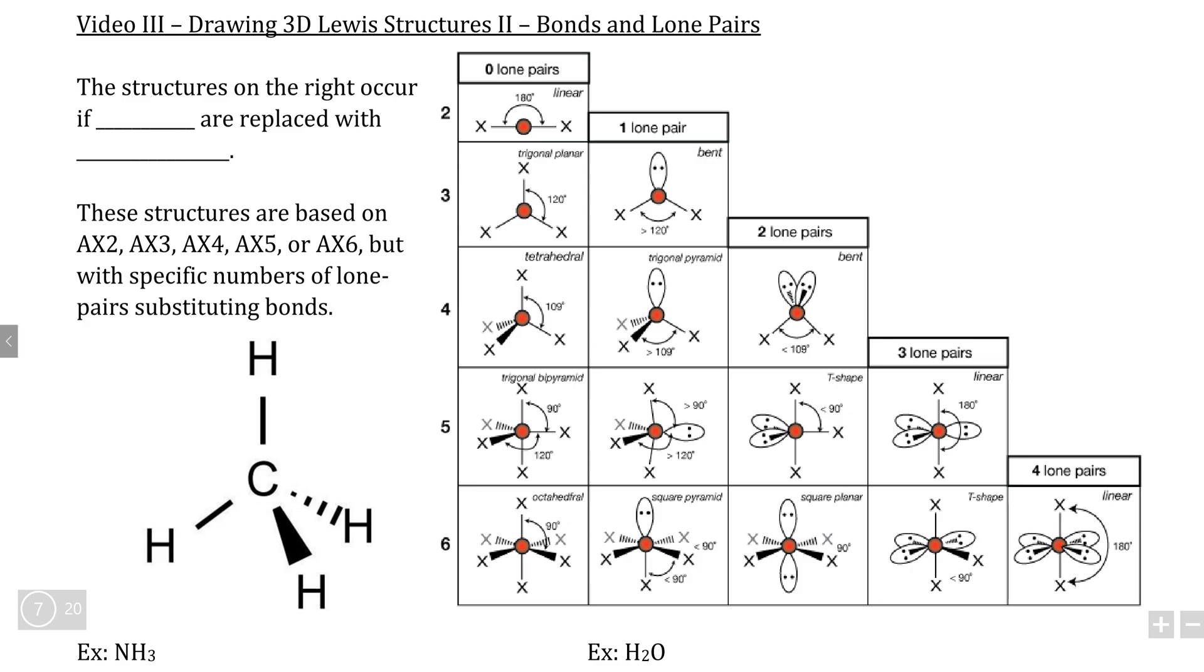If we first take a look at an AX3 compound, for example, let's say that the compound is not actually AX3, but is in fact AX2E, meaning two bonding groups and one lone pair instead. Well, in order to go from AX3 to AX2E, all that we need to do is get rid of one of the bonding groups and substitute that with a lone pair, which we can see indicated here.